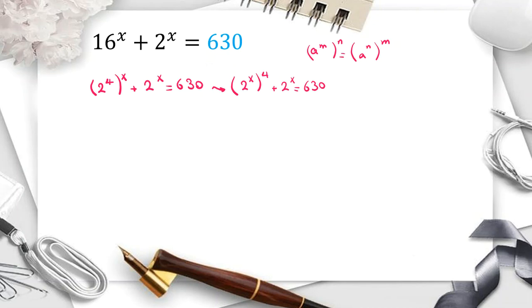The next step, we consider y equal to 2 to the x. So we can say y to the 4 plus y equal to 630.